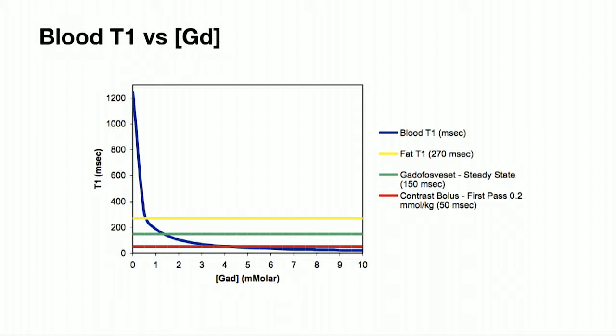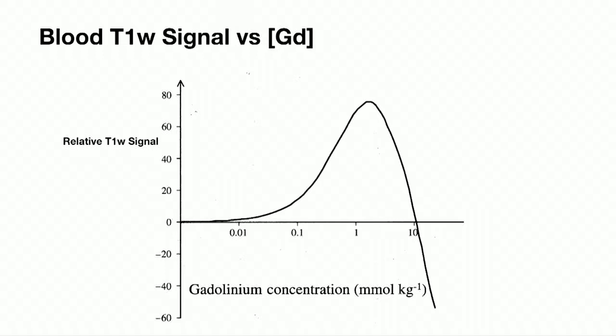Fat has a T1 of about 270 milliseconds at 1.5T and we want to drive our blood pool down well below that so we've got good contrast. Can you have too much? If we put in too much gadolinium contrast, although the T1 will be driven low, there's also a T2-star effect and the overall T1 signal is a combination of T1 shortening and T2-star. As we increase concentration of gadolinium in the blood pool we get increasing T1 signal, but up to a point where T2-star takes over and drives it right down.